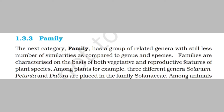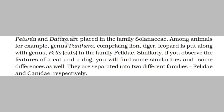Among animals, Panthera and Felis are included in the same family Felidae. If you observe the features of a cat and a dog, you will find some similarities and some differences. Therefore, they are separated into two different families — cats into Felidae while dogs into Canidae. On the other hand, Lion, Tiger, Leopard, and Cats are included in the same family Felidae.